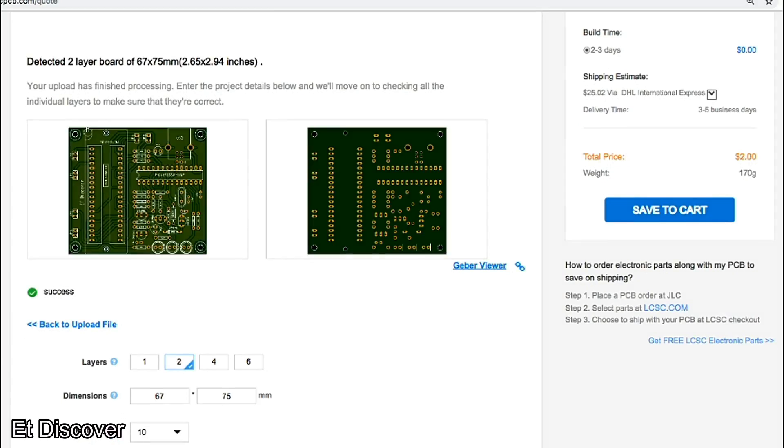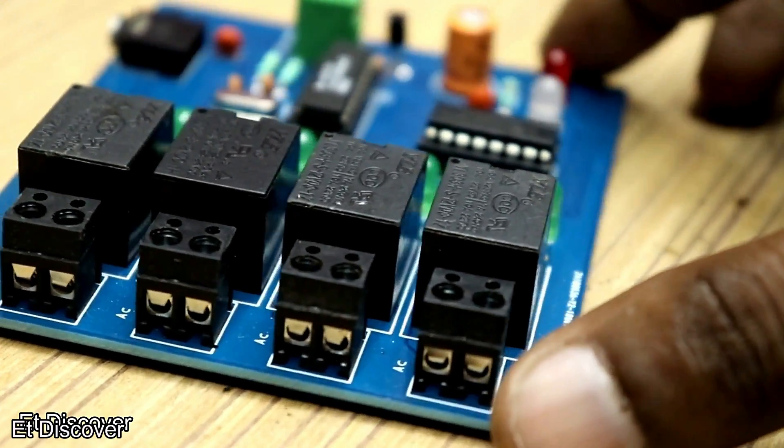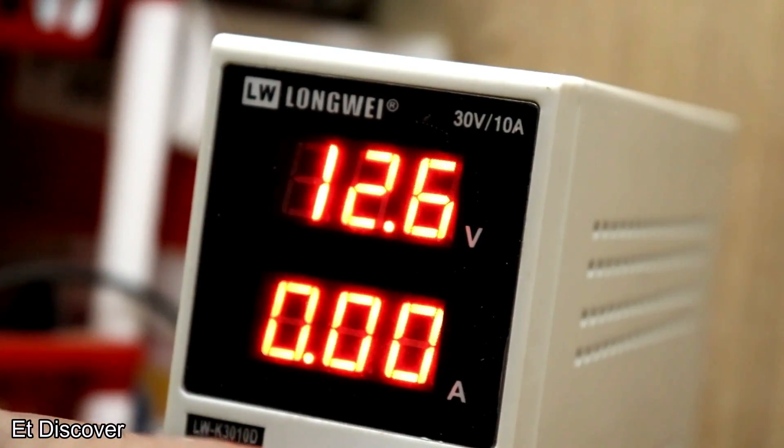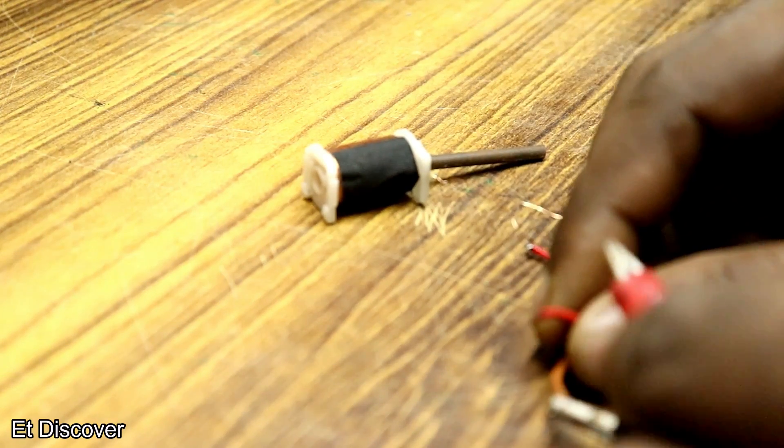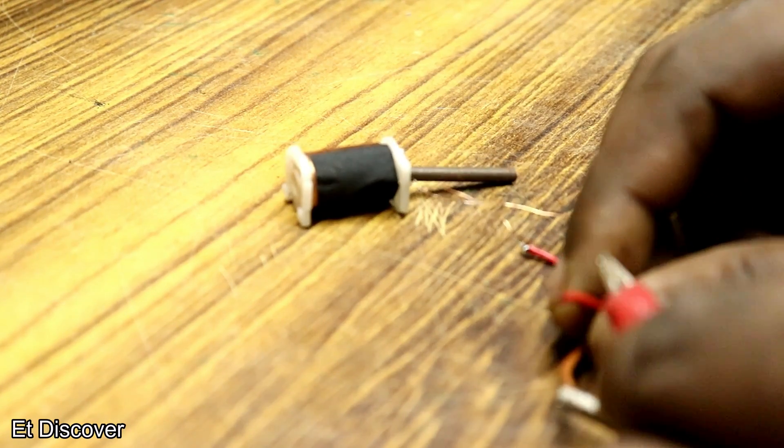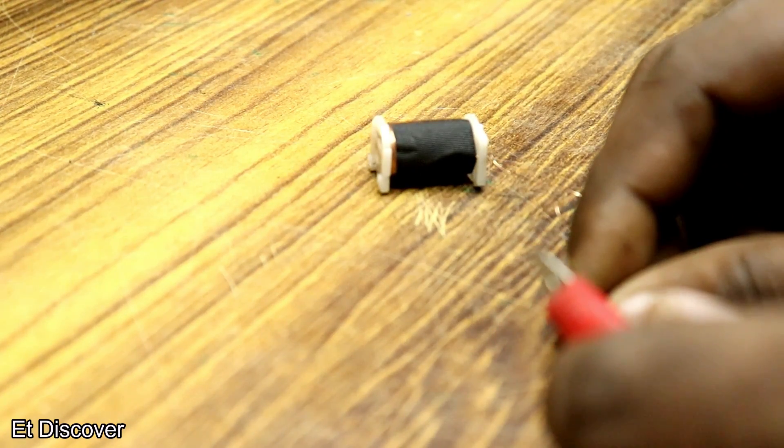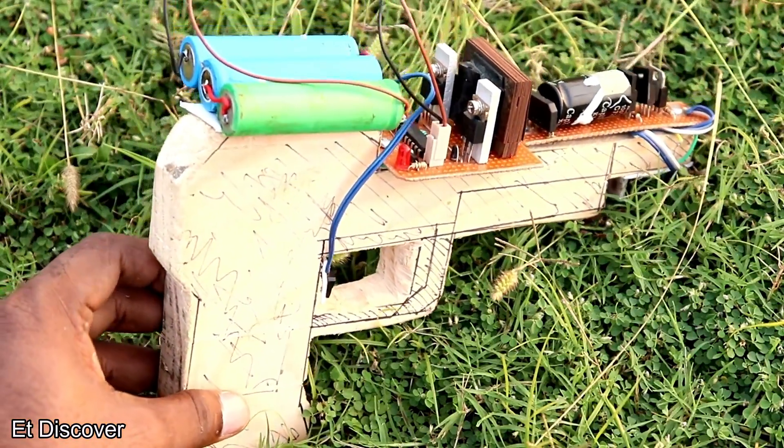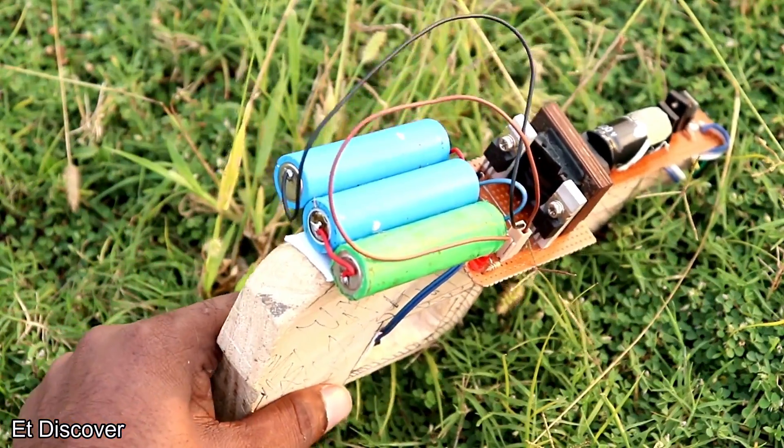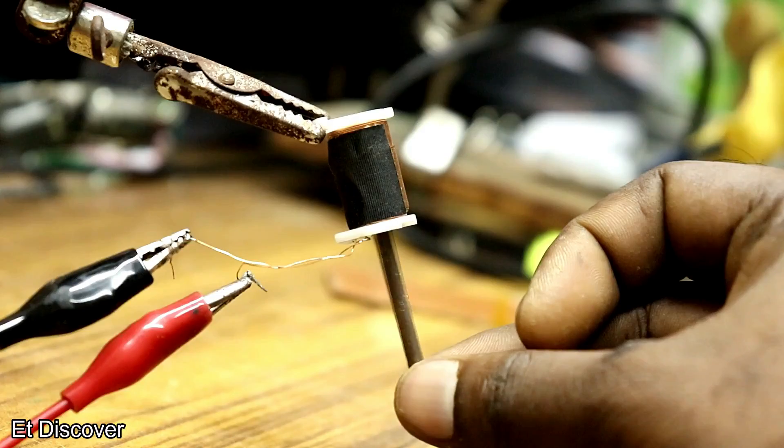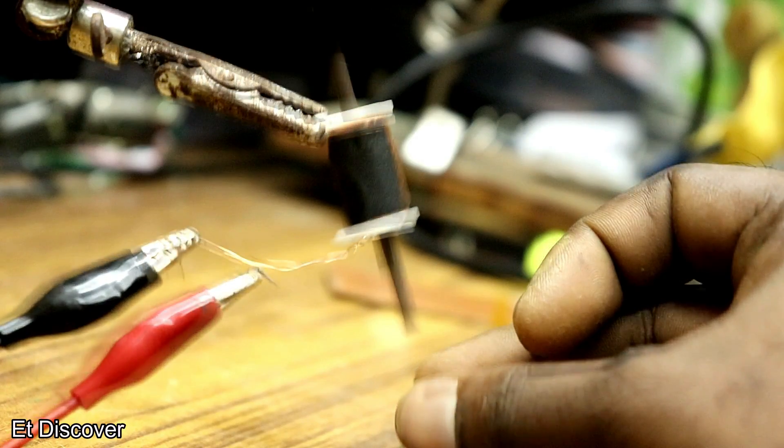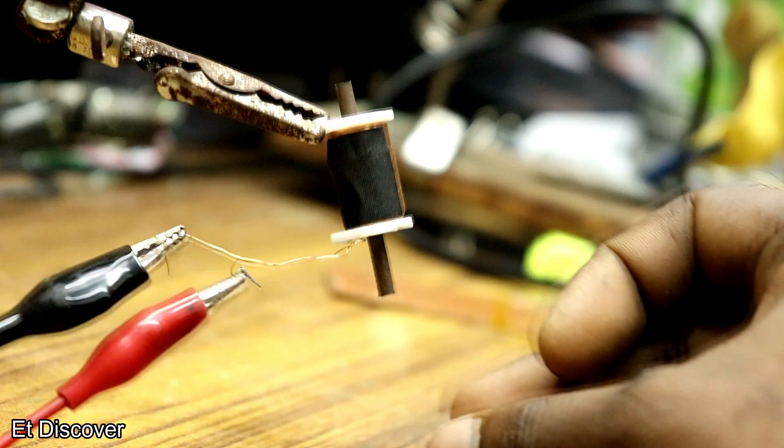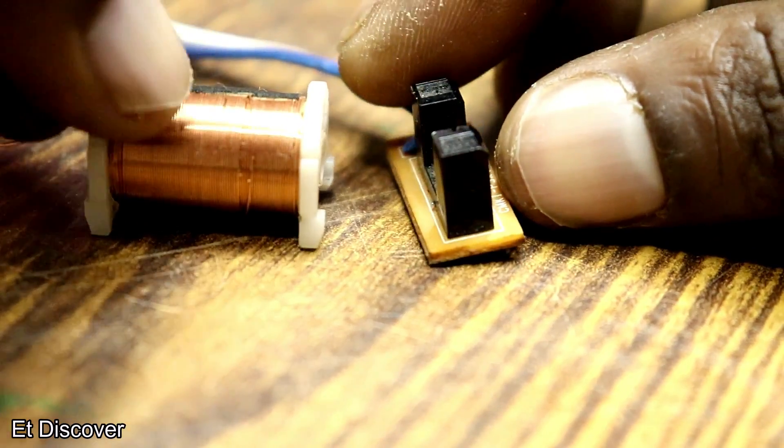If you send voltage to this coil for a very short time, just then the bullet will move forward very quickly. A coil gun is created using this process. But now the question is: how to adjust this voltage for a short time?